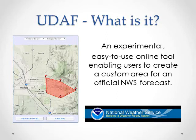In the image here on the left, a user has created a simple area shown in red. The tool returns the official National Weather Service forecast averaged within this area.